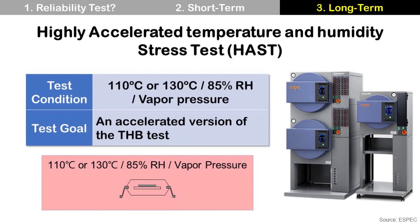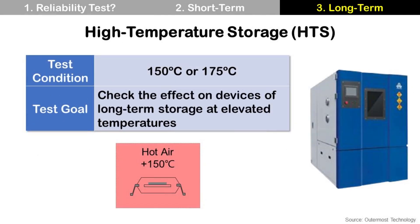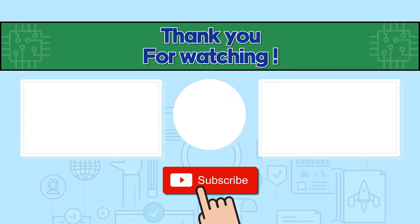Highly Accelerated temperature and humidity Stress Test, HAST, is an accelerated version of the THB test. THB takes 1000 hours, but HAST takes only 96 hours to complete. High-Temperature Storage test checks the effect of long-term storage at elevated temperature, including oxidation and intermetallic growth. Usually, 1000 hours are used for package qualification. Thanks for watching, and have a nice day. Bye-bye!